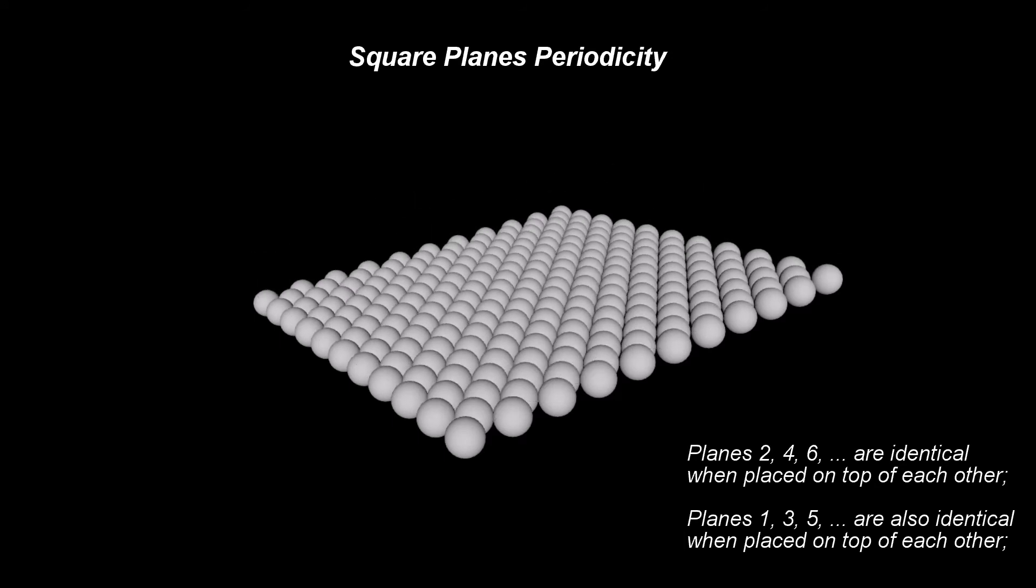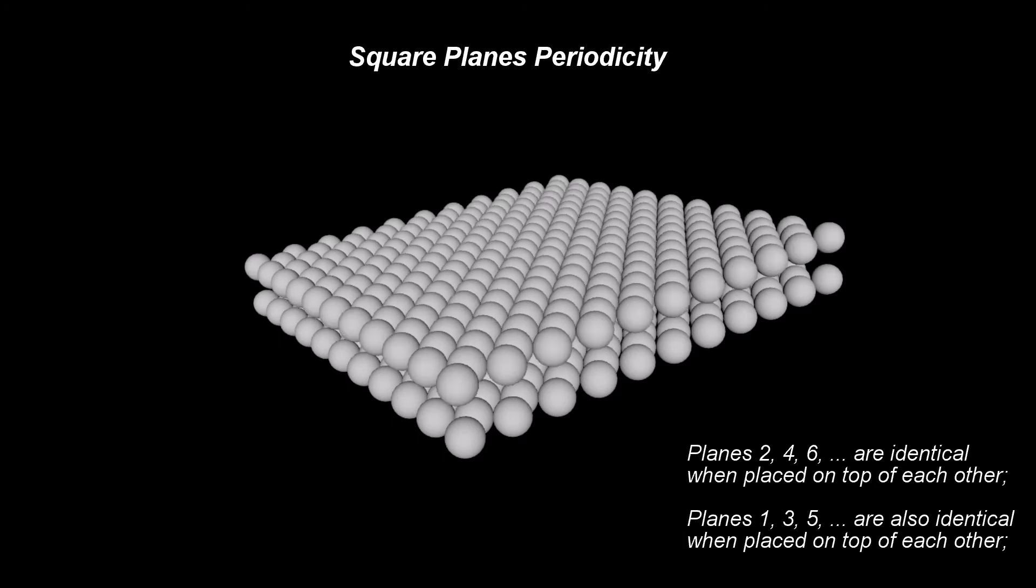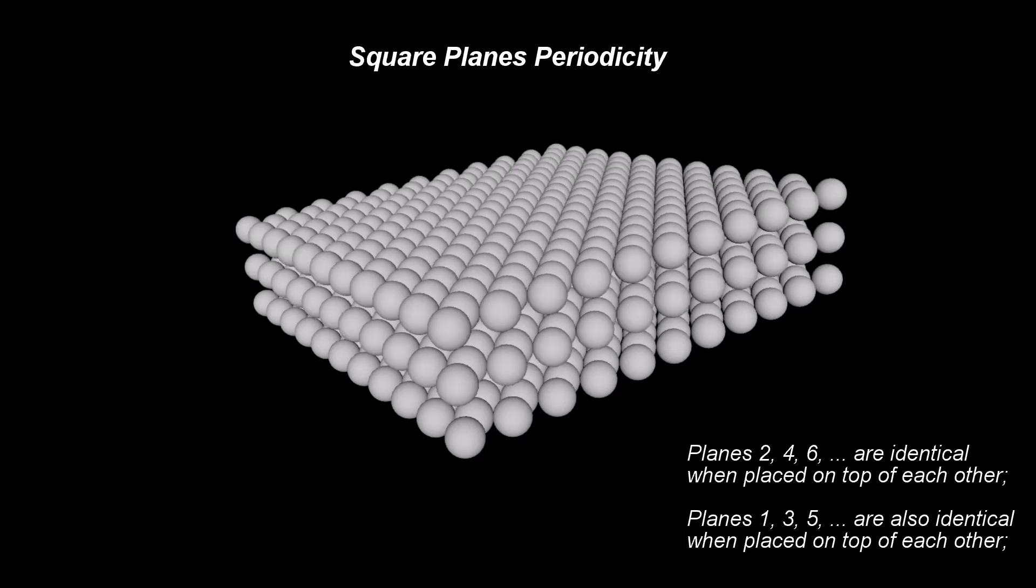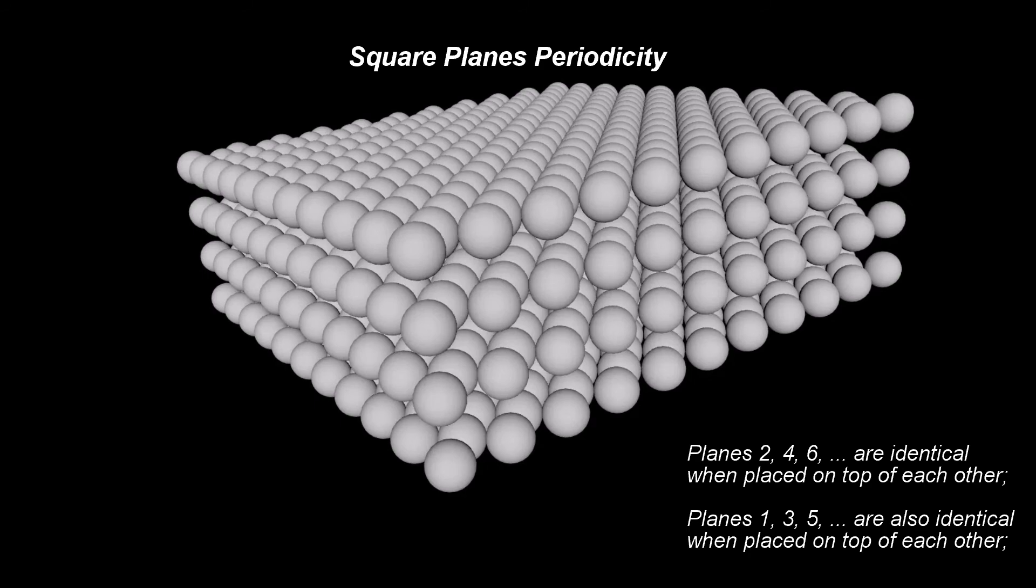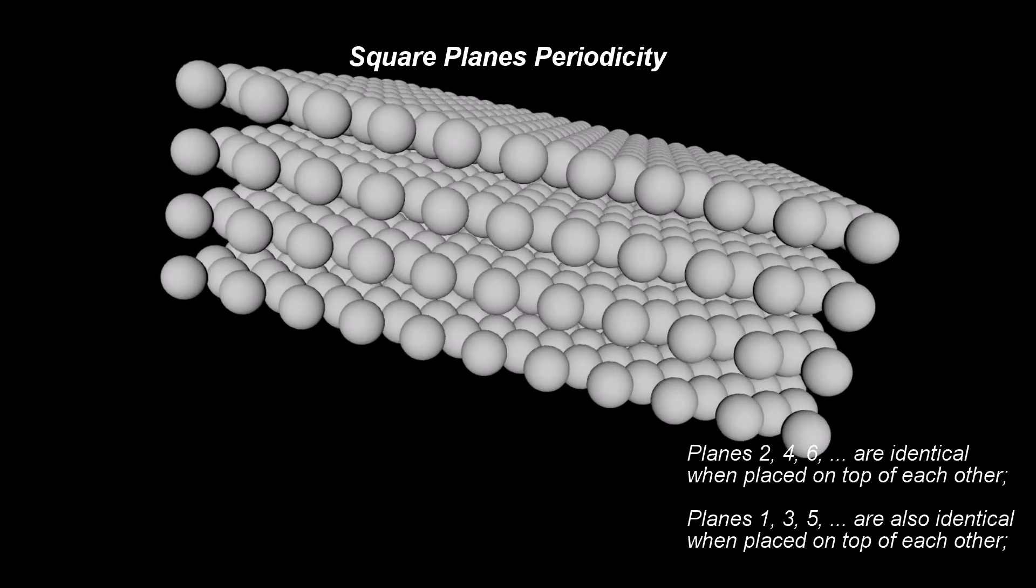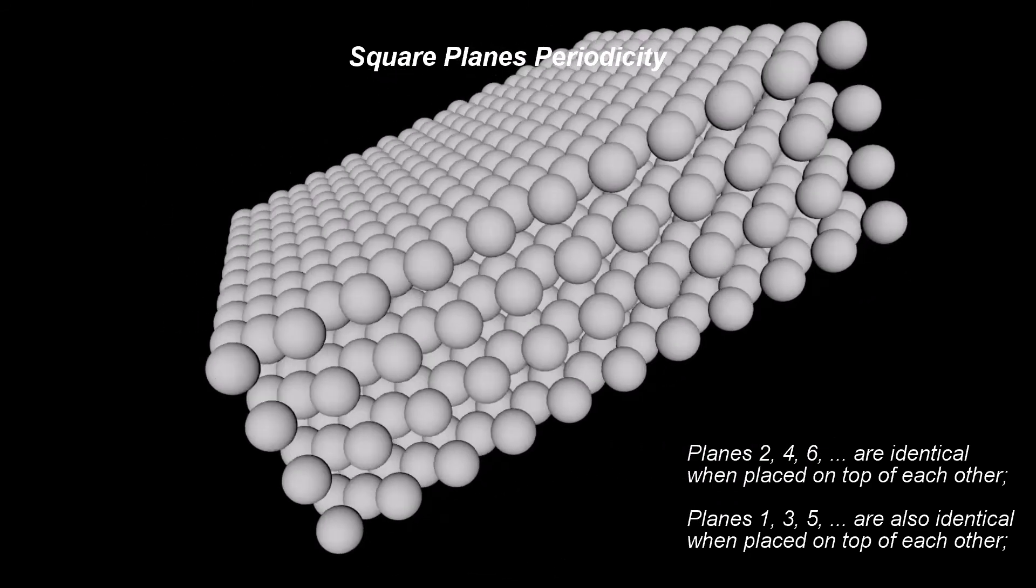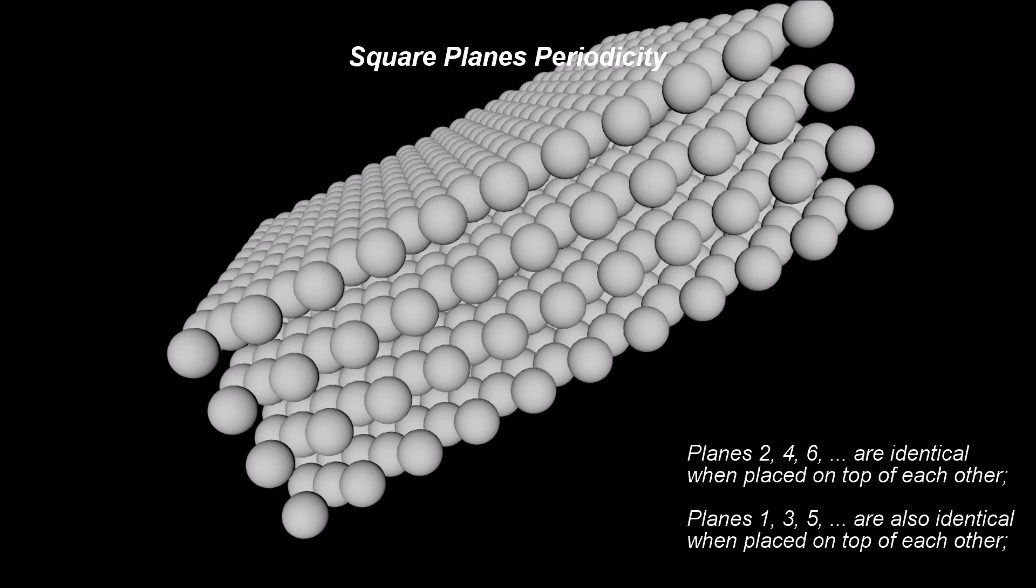Planes 1, 3, 5 are also identical when placed on top of each other. It is important to note that a translation along a direction of 45 degrees separates the two types of planes. No rotation is needed to transform one plane into another.